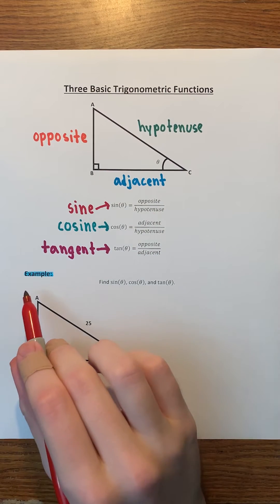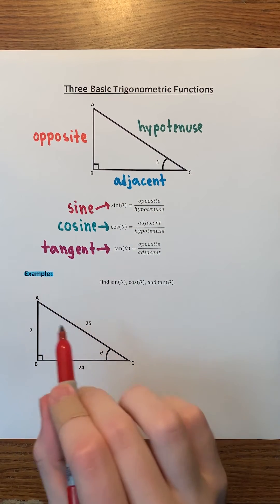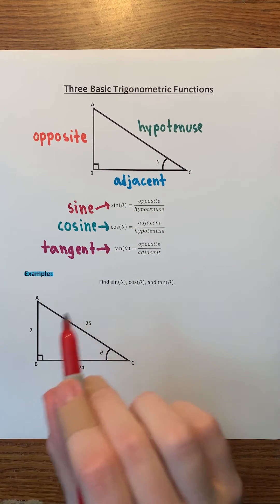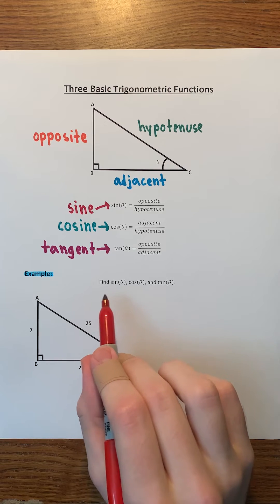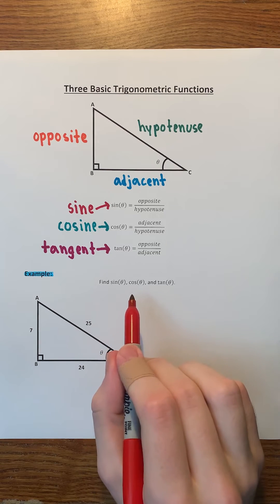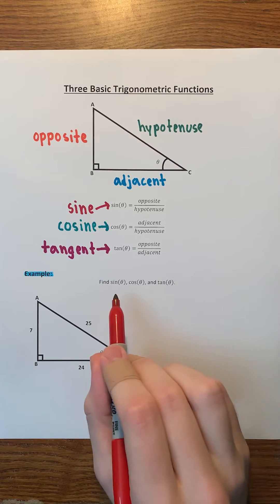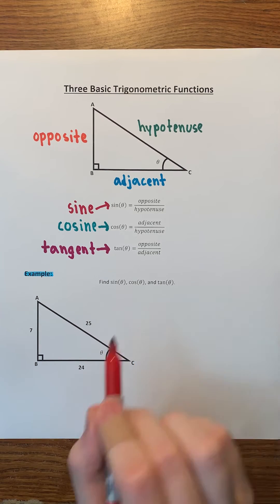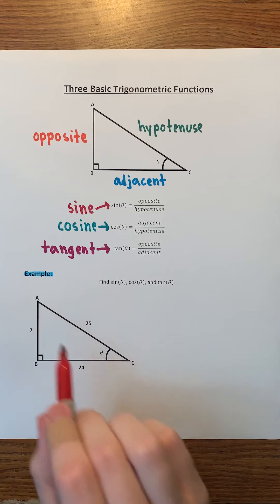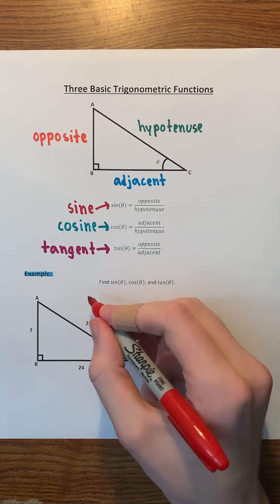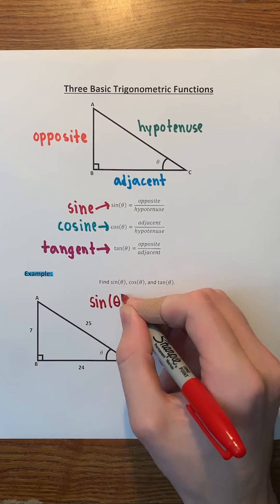Next, let's do an example. We're given this right triangle, and we have to find sine of theta, cosine of theta, and tangent of theta, where theta is the measure of angle ACB. Let's first find sine of theta.